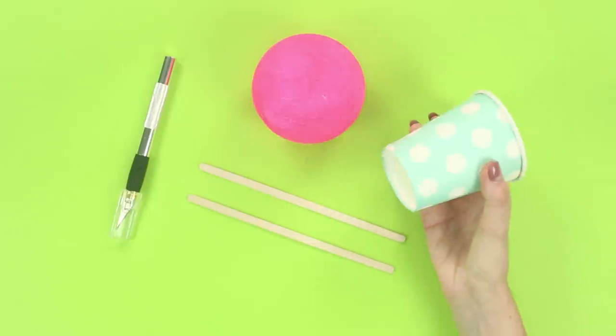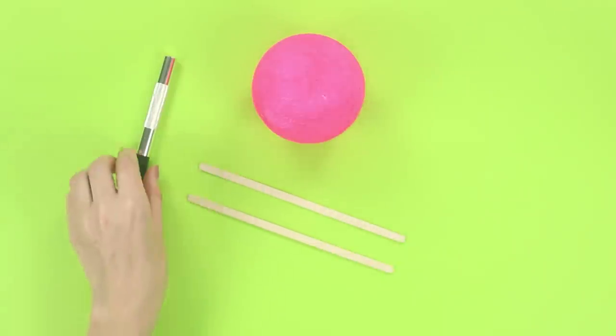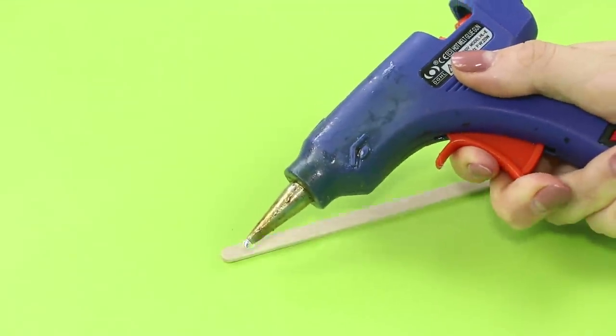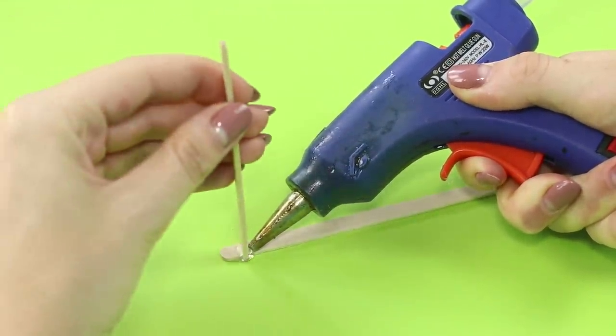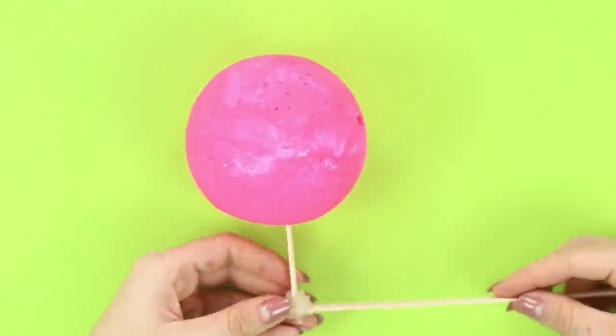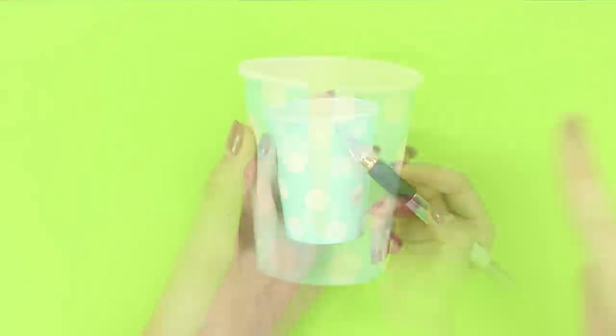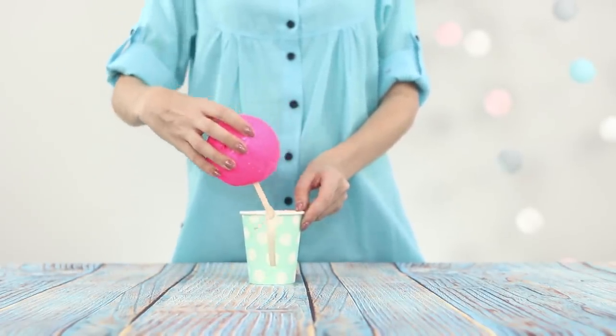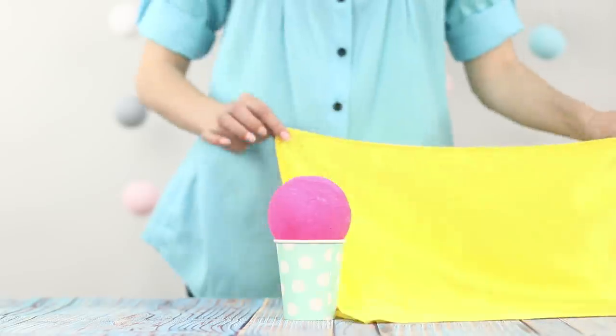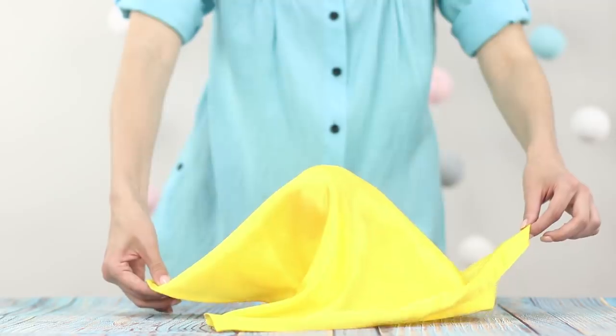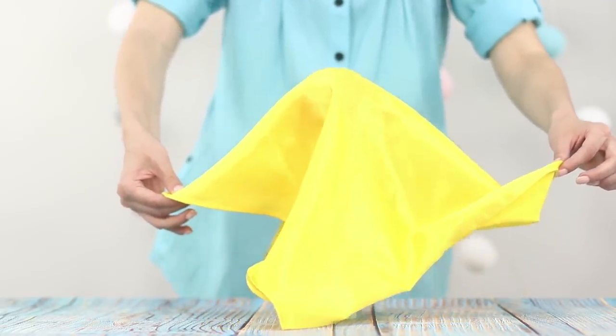For this trick, you need a cardboard cup, wooden sticks, and a foam ball. Break one stick in half. Glue half of the stick to the whole stick at an angle of 90 degrees. Attach the stick to the ball. Cut out an elongated hole on the cup. Insert the construction with the ball into the cup. Covering it with a handkerchief, unfold the cup so that it's convenient to hold the stick and it's invisible under the handkerchief. Ready for the flight? Take off!